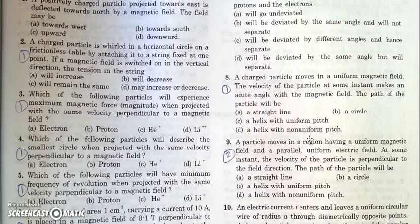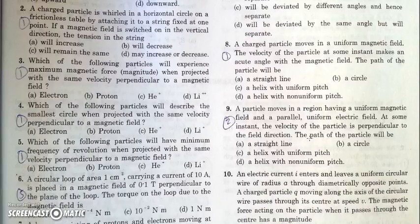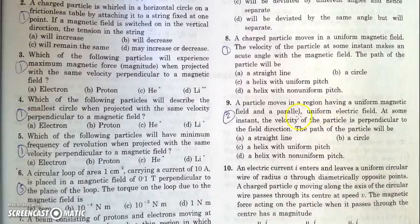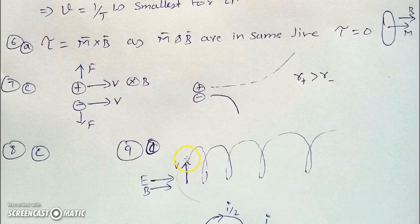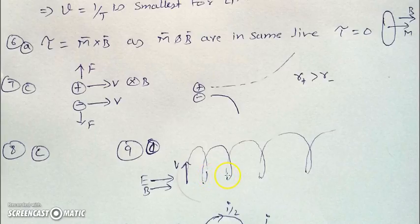If there are parallel electric and magnetic fields, and a particle is thrown perpendicular to the field, the motion will be as follows: the particle will move in a circle due to the magnetic field, and because of the electric field it will also drift in the field direction. As the velocity in this direction increases, the pitch will increase, whereas the time period will remain the same. So the pitch will increase and the path will be a helical path with non-uniform pitch.